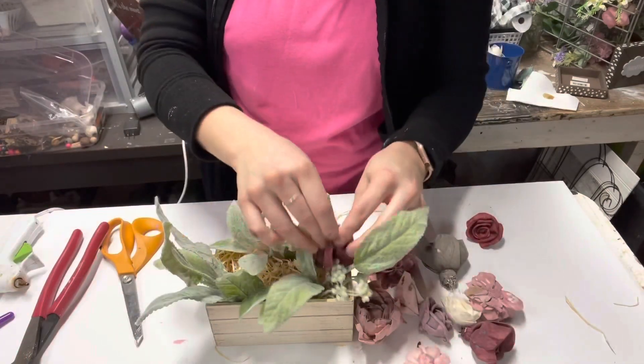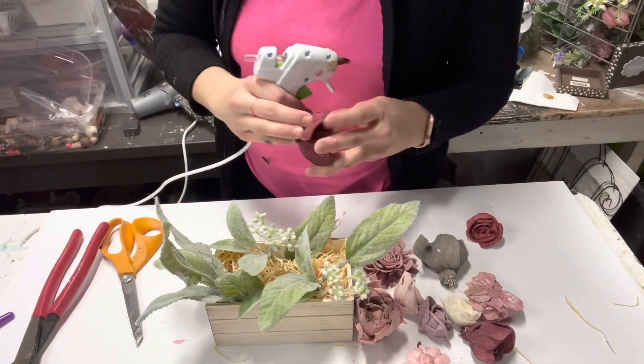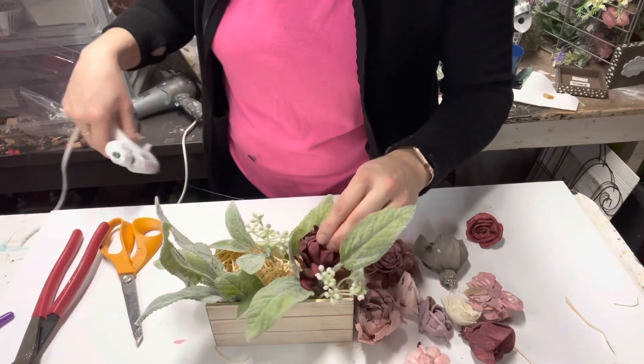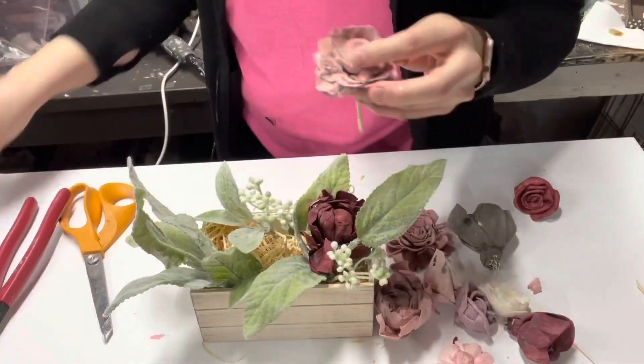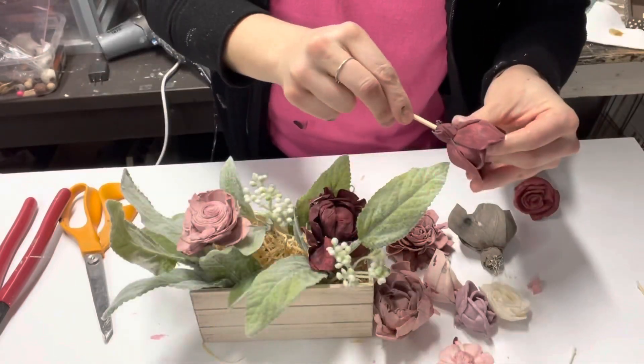So I got all the greenery situated and then I had some of these scrap solo wood flowers from another project that I did. And I just used them because they were like the perfect color that I already was going for for this tiered tray. Anyway, I just stuck those in there, you know, like it's pretty straightforward here.